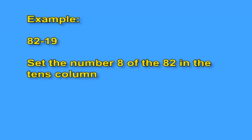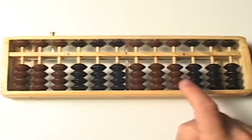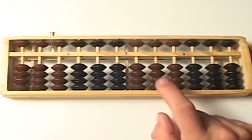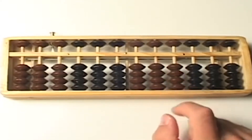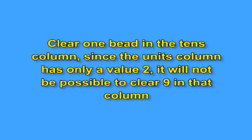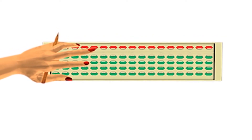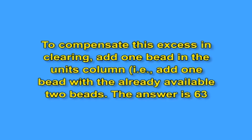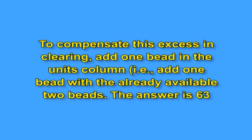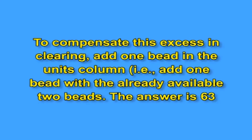Example: 82 minus 19. First, set the number 8 of 82 in the tens column. Second, set the number 2 of 82 in the units column. Right and left hands should be on the units and tens columns respectively. We have to clear 1 in the tens column and 9 in the units column. Since the units column has only value 2, it is not possible to clear 9. With the left hand, clear 1 bead in the tens column. To compensate this excess in clearing, add 1 bead in the units column — that is, add 1 bead to the already available 2 beads. The answer is 63.